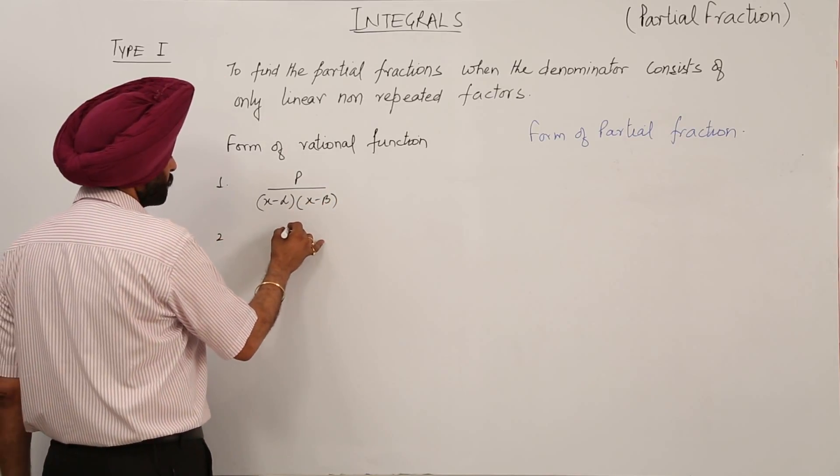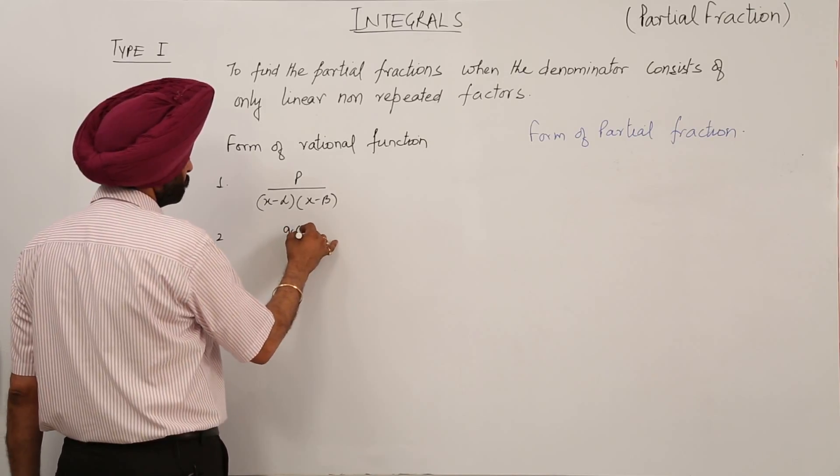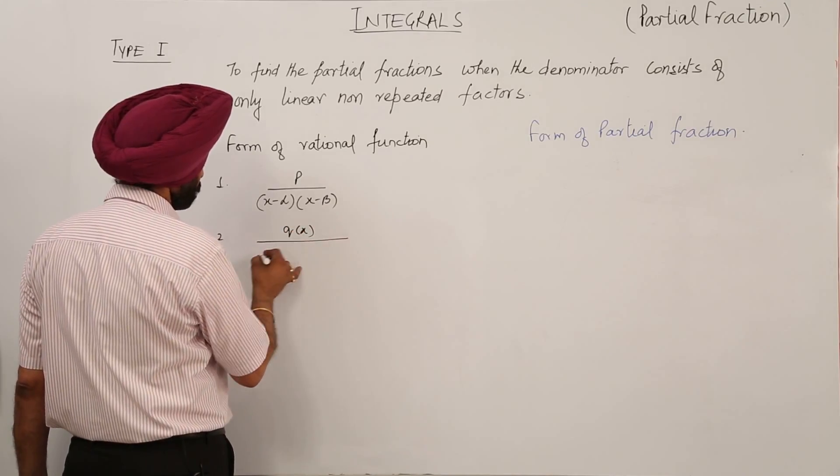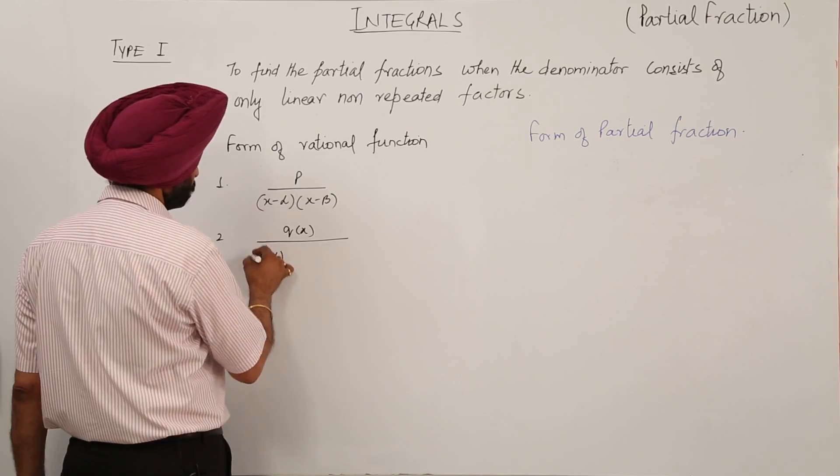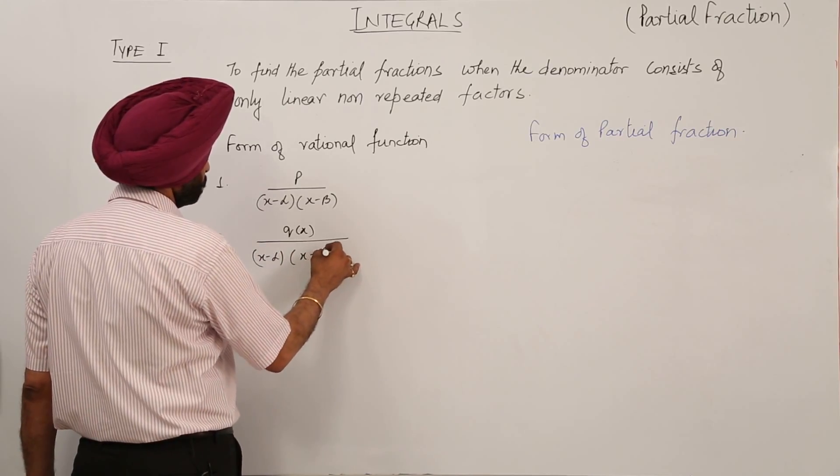Number 2, it can be Qx upon x minus alpha x minus beta.